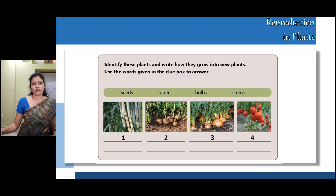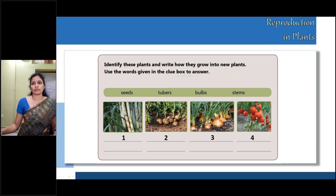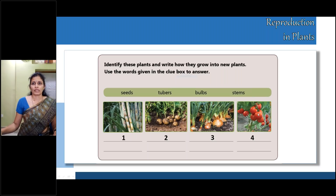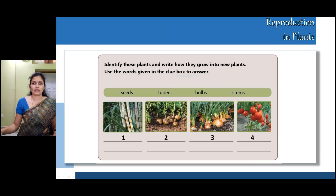The third picture is also something we eat in our curries — guess your answer. In the next slide we'll see the answers. The fourth picture, what is this part? It is a fruit. Can anyone tell me what this fruit is? Yes, it is tomato. Now let us see the answers.